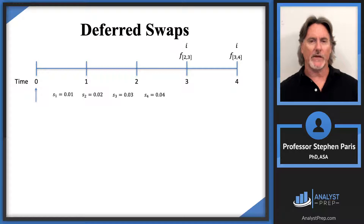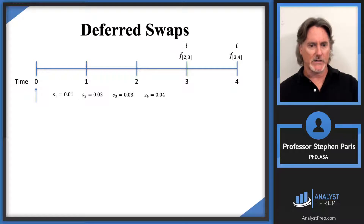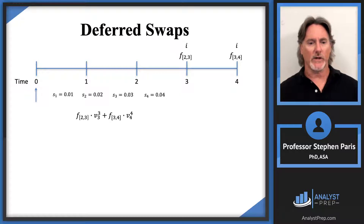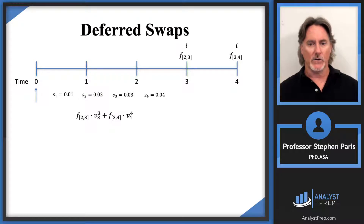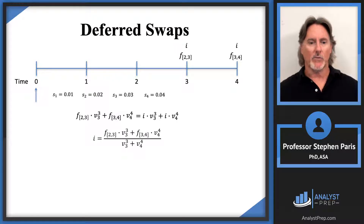The swap occurs fairly by taking the present value of the two sets of payments and setting them equal to each other. The present value of payments based on forward rates — taking the forward rate at time three discounted back to time zero, and the forward rate at time four discounted back to time zero using the appropriate v-factors — is set equal to the present value of fixed payments of i at time three and time four. Factor out i and divide, and that gives the swap rate.